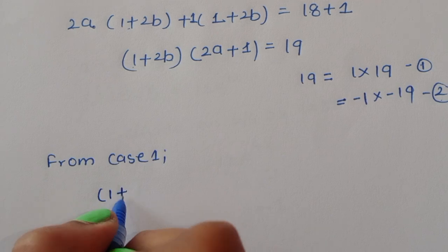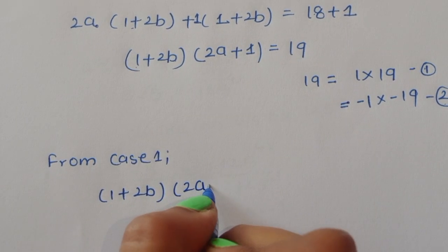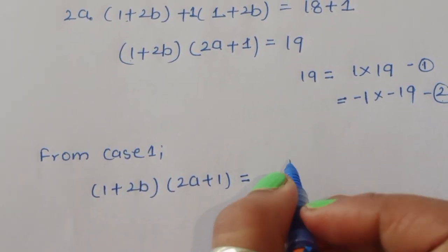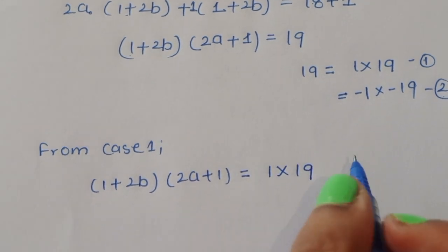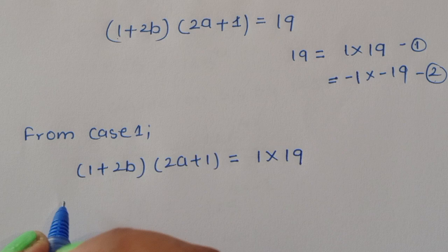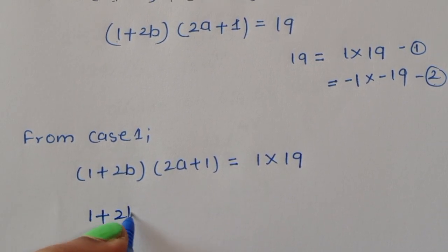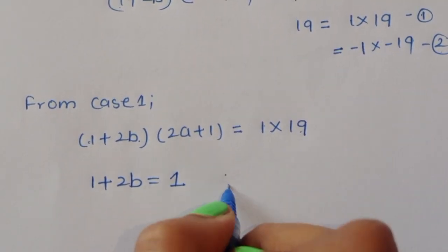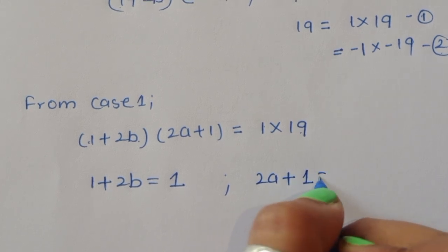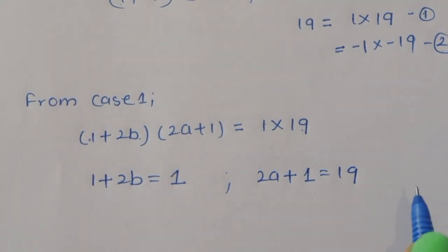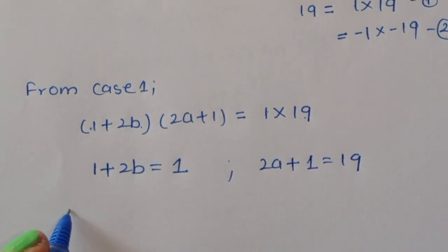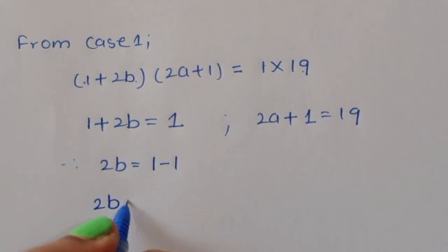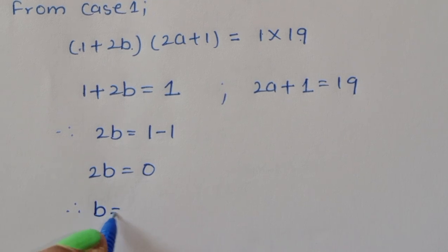From Case 1: (1 plus 2b) times (2a plus 1) equals 1 times 19. Comparing left-hand side and right-hand side, we get 1 plus 2b equals 1 and 2a plus 1 equals 19. From 1 plus 2b equals 1, we get 2b equals 0, therefore b equals 0.